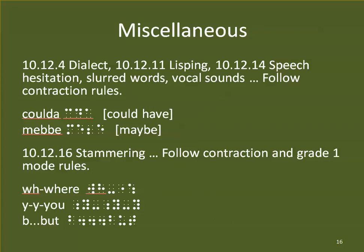In the old code, if we had stammering on either side of hyphens, we needed the same dot configurations. In UEB, we do not. For example, 'wh-where': we spell out W-H on one side of the hyphen — otherwise W-H standing alone would be read as 'witch.' On the other side of the hyphen, we can use the contraction for 'where.' For 'y-y-you': the first Y has spaces on one side and a hyphen on the other — standing alone — needing a grade one symbol indicator. The last Y, meant to read as the word 'you,' is standing alone without a grade one indicator, so it is read as 'you.'